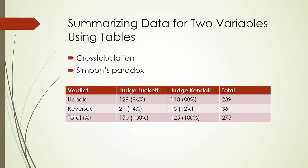Now let's see how to summarize data for two variables using tables. A natural way to summarize data for two variables is to use a table — a fancy name is cross-tabulation. It is a tabular summary of data for two variables, with the classes for one variable represented by the rows and the classes for the other variable represented by the columns. It is common practice that data in two or more cross-tabulations are combined or aggregated to produce a summary cross-tabulation showing how two variables are related.